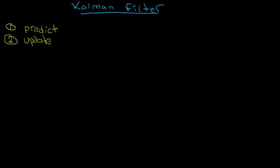Those are the two main components of the Kalman filter. I want to go over some terminology before continuing, because there are tons of variable names and it can get confusing quickly. The convention I'll use: if I have a variable V with a little bar over it — V-bar — this means it's a variable created during the prediction step; it's a predicted variable.